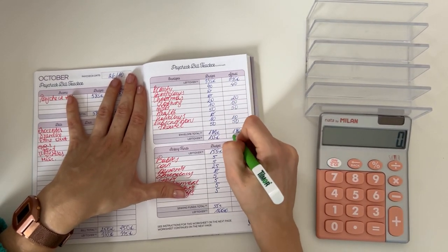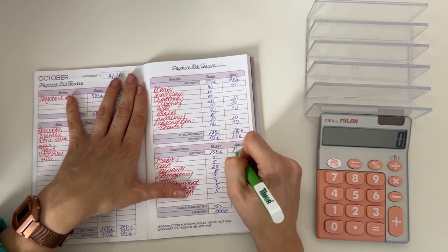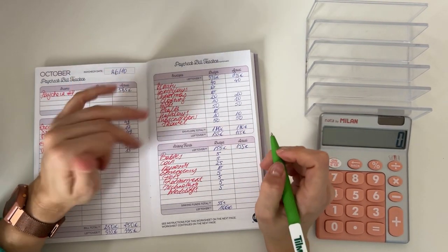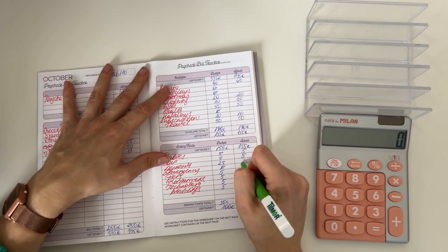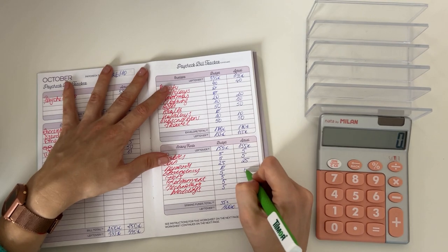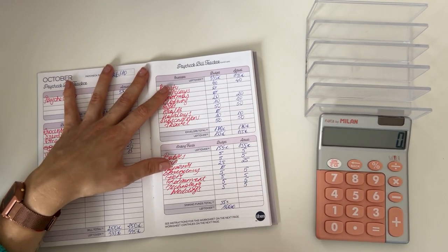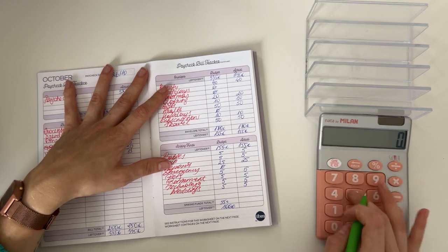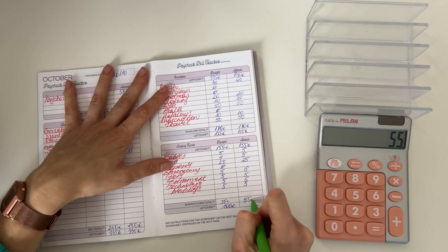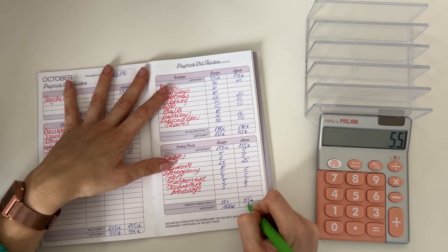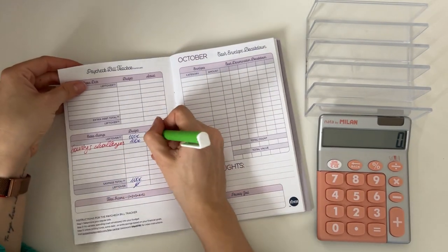155 we brought down to long-term sinking funds. Babies got a 5 as did car, deposit got 25, and then we put 5 into pets, retirement, technology and weddings each. So in total that was 55 euros and 155 minus 55 is 100.